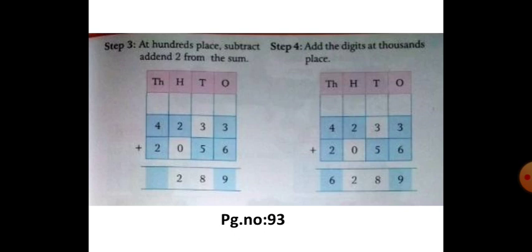Next, step number 4. Add the digits at thousandth place. So the number is 4 plus 2. So 4 plus 2 is 8. So finally, the answer is 6289.